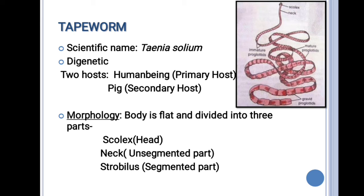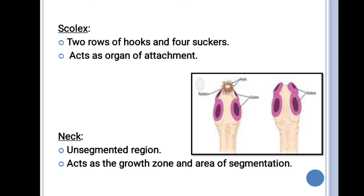The scolex consists of two rows of hooks and four suckers, and it acts as an organ of attachment. In the picture you can see which ones are the hooks and suckers. You can see how the suckers are present on four sides of the tapeworm.